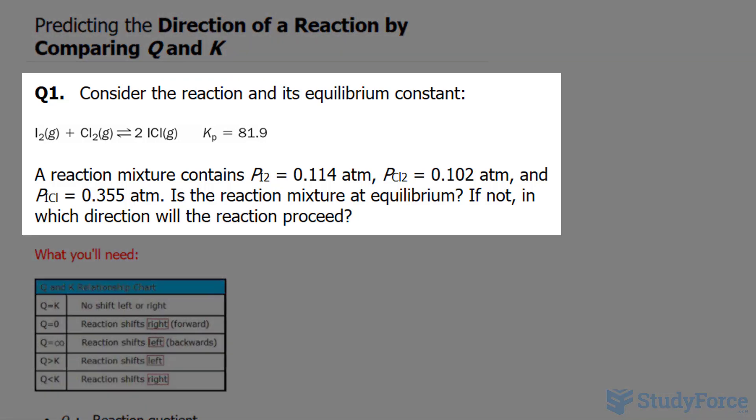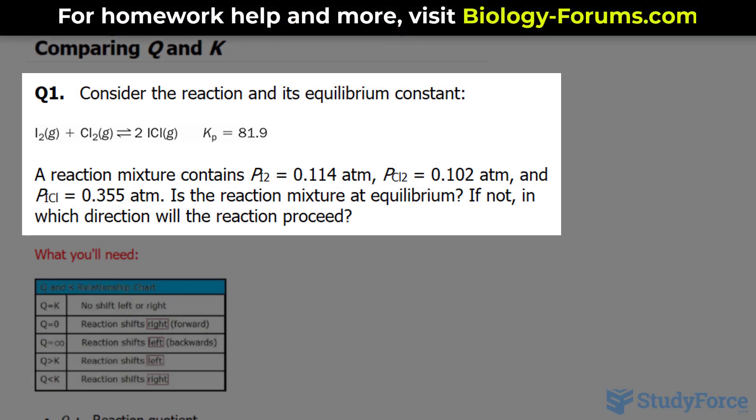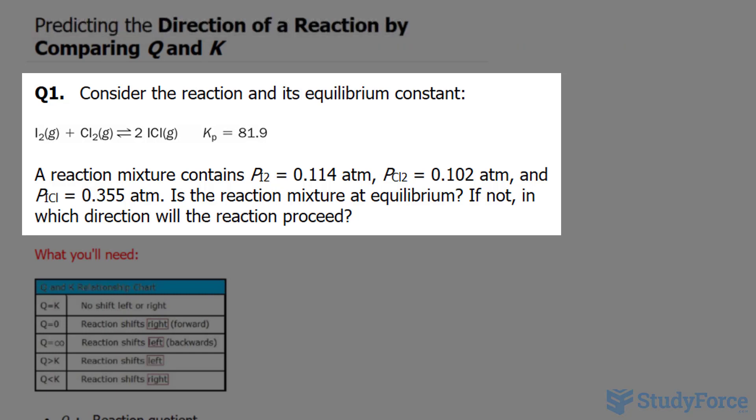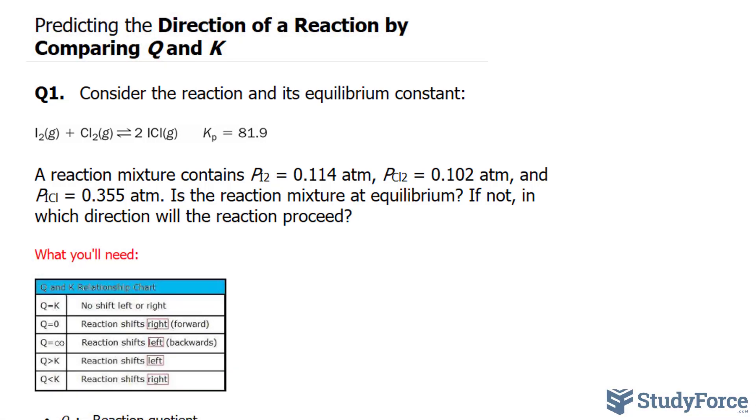The first question reads: consider the reaction and its equilibrium constant. A reaction mixture contains a partial pressure of iodine equaling 0.114 atmosphere, a partial pressure of chlorine gas of 0.102 atmosphere, and a partial pressure of iodine chloride of 0.355 atmosphere. Is the reaction mixture at equilibrium? If not, in which direction will the reaction proceed?